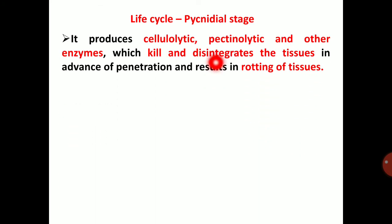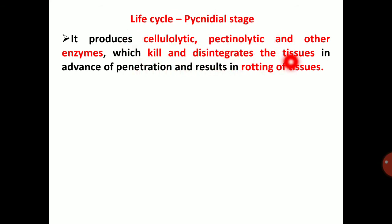The pathogen produces cellulytic and pectinolytic enzymes which kill and disintegrate the tissues in advance of penetration, resulting in rotting of tissue. Because the pathogen is a facultative saprophyte, it first kills the tissue before penetrating — the dead tissues then serve as nutrients for the pathogen.